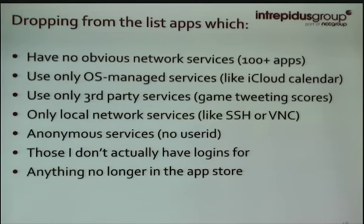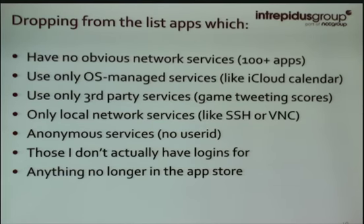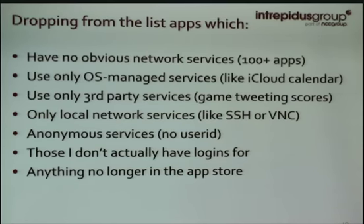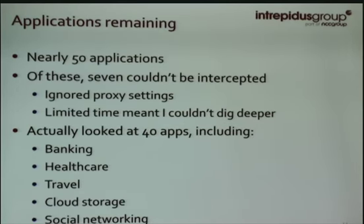Starting at 230 apps, I dropped anything that obviously didn't do much with the network — that was over 100 apps. I dropped anything that was doing only OS-managed services like iCal or Game Center. I wanted to focus mostly on third-party apps. I ignored things like a game tweeting a high score, and anything only authenticating to local network services like an SSH or VNC client. A bunch of my apps were anonymous — they didn't actually use user authentication. There were a few where I didn't have an account or couldn't find them in the App Store. In the end, I ended up with close to 50 applications.